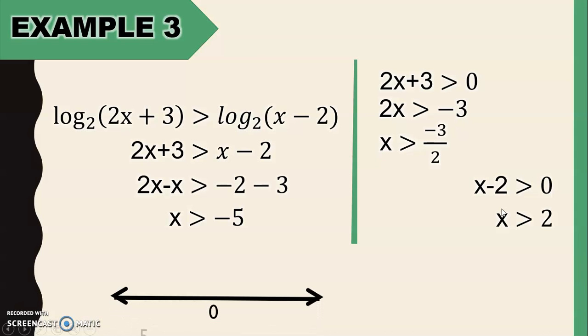So we have 0, negative 5. Negative 5 is not included in the solution. It doesn't have an equal sign, so open circle for negative 5. That means negative 5 is not included in the solution. So x should be greater than negative 5. So the direction is to the right, because the solution are values of x which are greater than negative 5. So this is now the graph of x greater than negative 5.